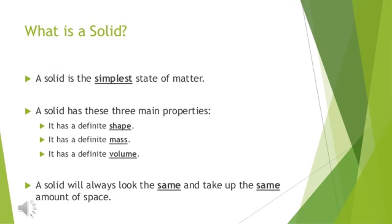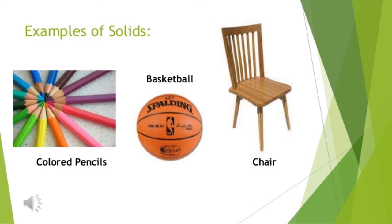Now let's move to the next slide about the characteristics of solids. A solid is the simplest state of matter and has three main properties: it has a definite shape, a definite mass, and a definite volume. A solid will always look the same and take up the same amount of space. Examples of solids include colored pencils, a basketball, and a chair.